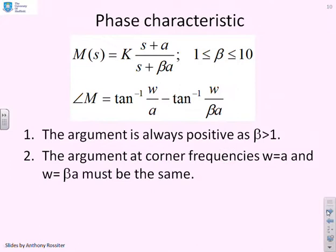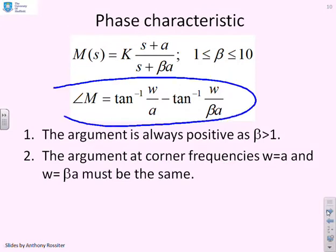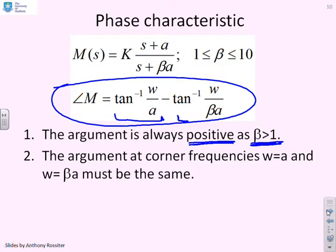What about the phase characteristic, as this is the most important one? The phase of the lead is given by tan to the minus 1 of omega over A minus tan to the minus 1 of omega over beta A. For this to be a lead, we've assumed that beta is always bigger than 1, and therefore this formula will always be positive — tan to the minus 1 of omega over A must be bigger than tan to the minus 1 of omega over beta A, so we get a positive argument.